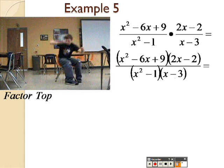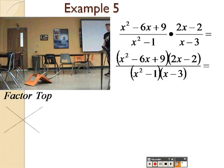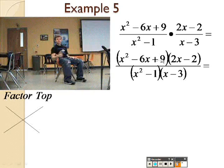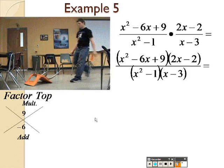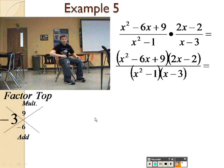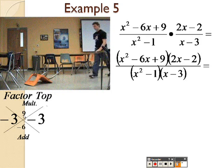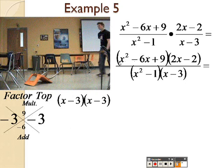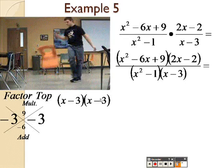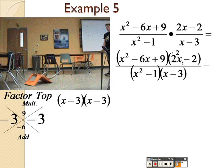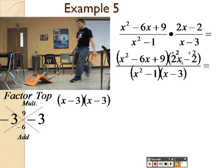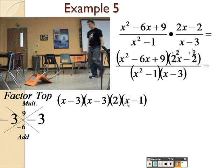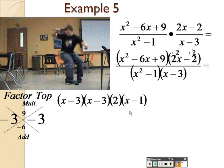I'm going to start by factoring the top. And by doing so, this is just a quadratic equation. What two numbers multiply to give you the 9 that add to give you a negative 6? Well, that happens to be negative 3 and negative 3, right? Because negative 3 times negative 3 is 9. Negative 3 plus negative 3 is negative 6. So, this turns into x minus 3 and x minus 3. I also have a 2x minus 2, which I can divide a 2 out of both those. And I'm left with 2, which I pulled out, and an x minus 1 on the inside. So, there is my top.